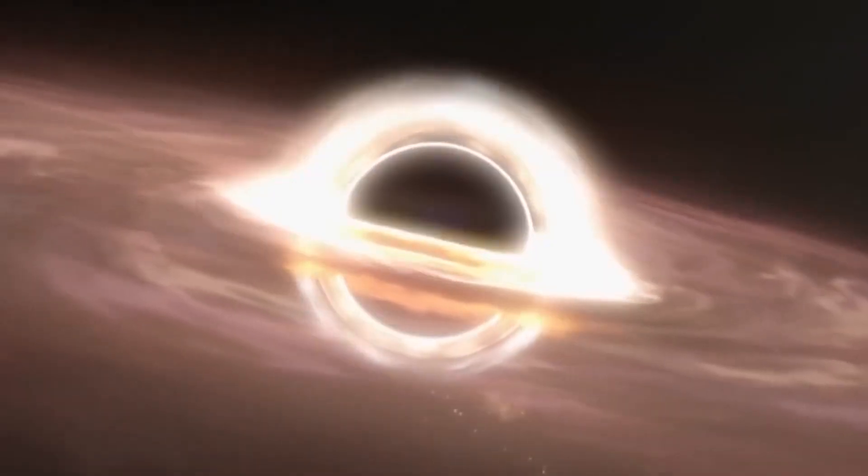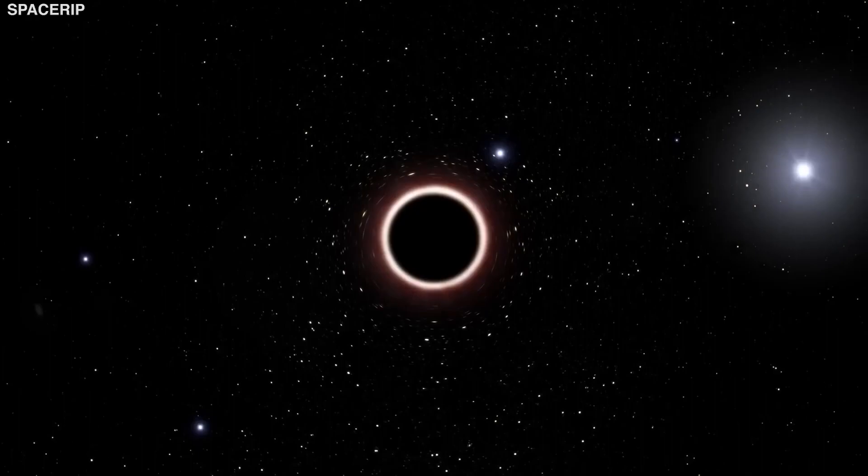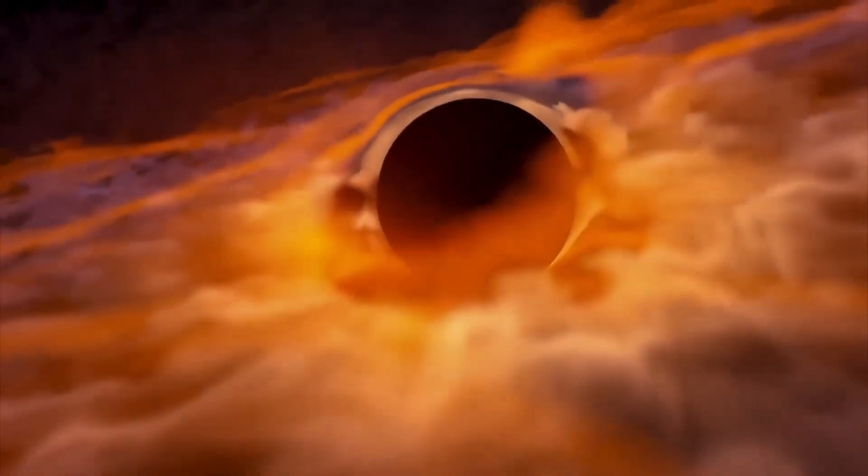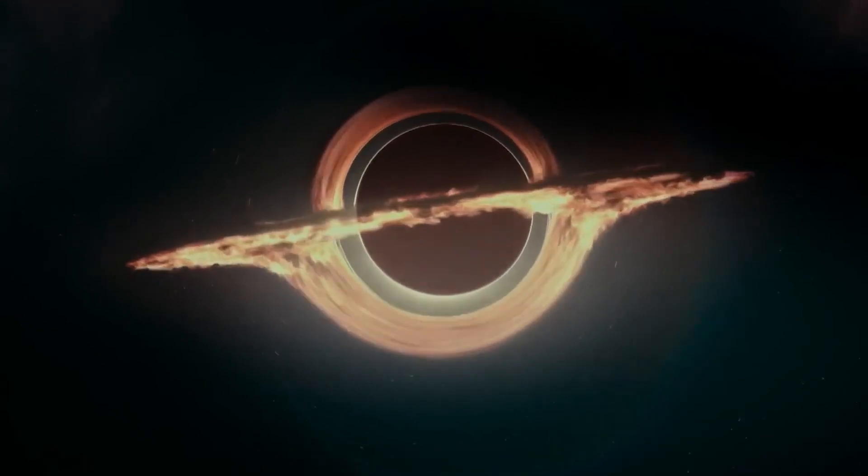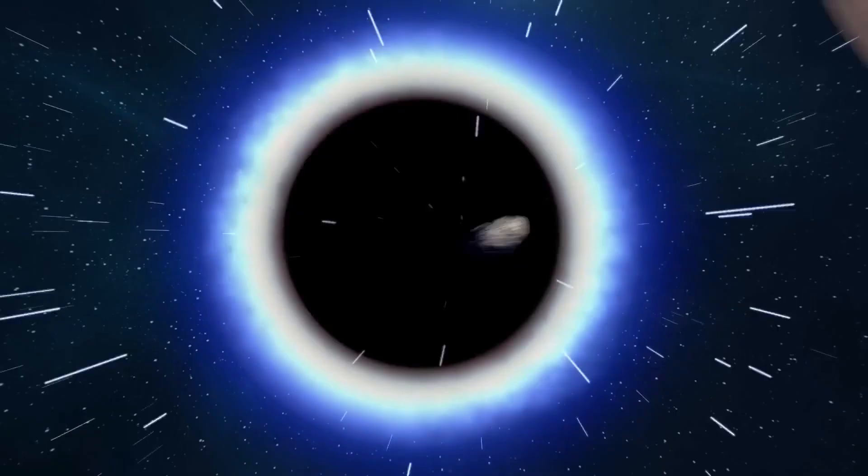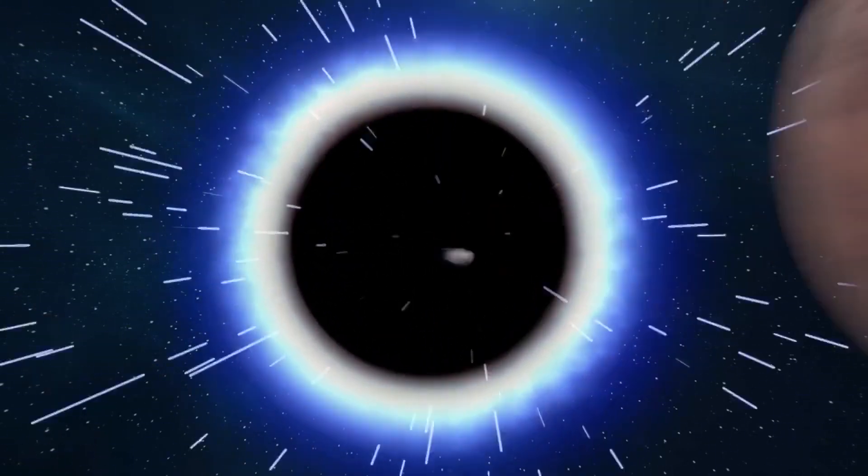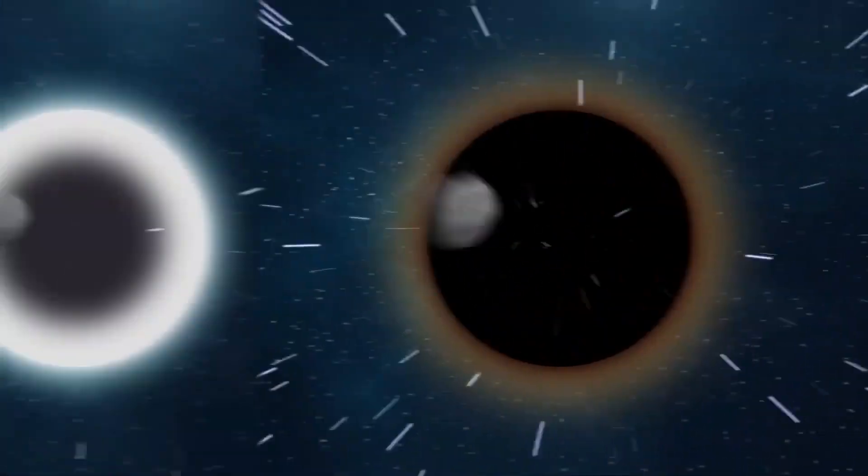Black holes are regions in space that can pull even light due to their strong gravitational pull. Their existence was finally confirmed when scientists studying their mind-bending effects on their surroundings captured an image. Now coming back to white holes, they do not even allow light to enter them. Only matter is found inside and ejected. They are basically reverse black holes.